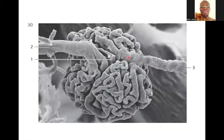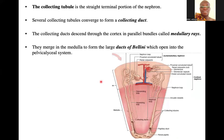This is a scanning electron micrograph showing how the afferent and efferent arterioles look, and that is the glomerulus. You can see one vessel and the other. Looking at the dimensions of the widths, you should be able to tell which is afferent and which is efferent. The afferent has a larger diameter than the efferent, to help create hydrostatic pressure to allow ultrafiltration to occur.